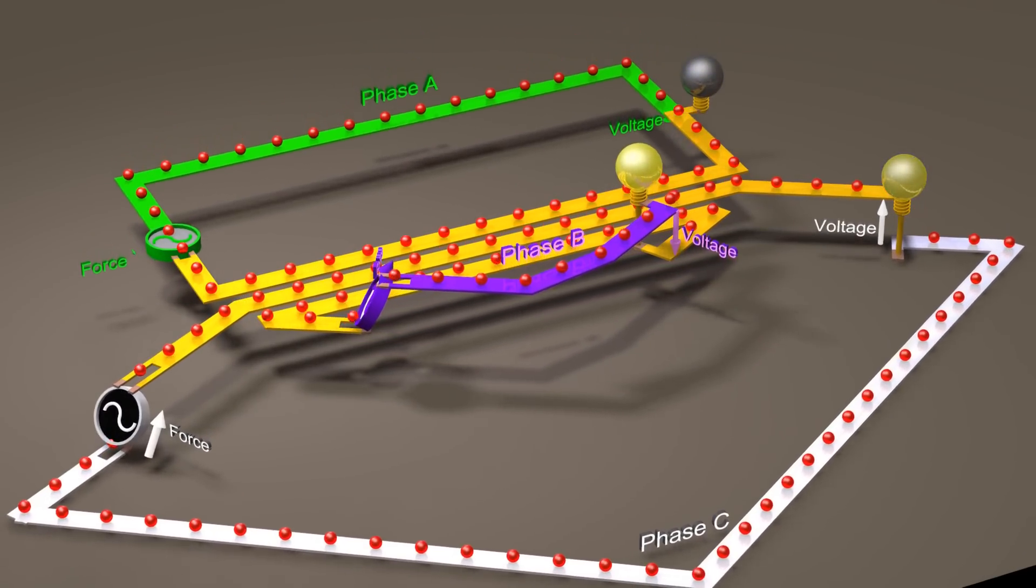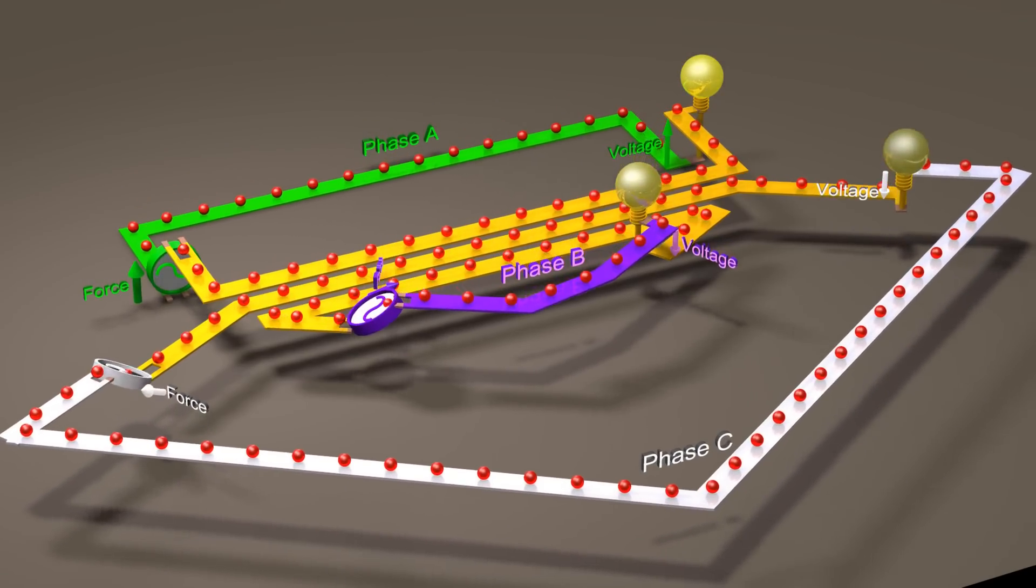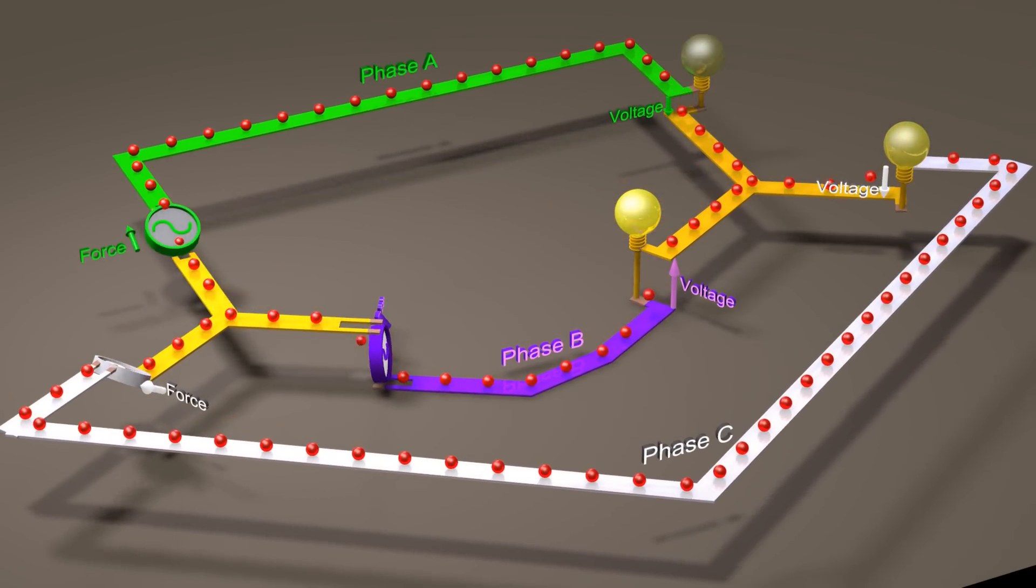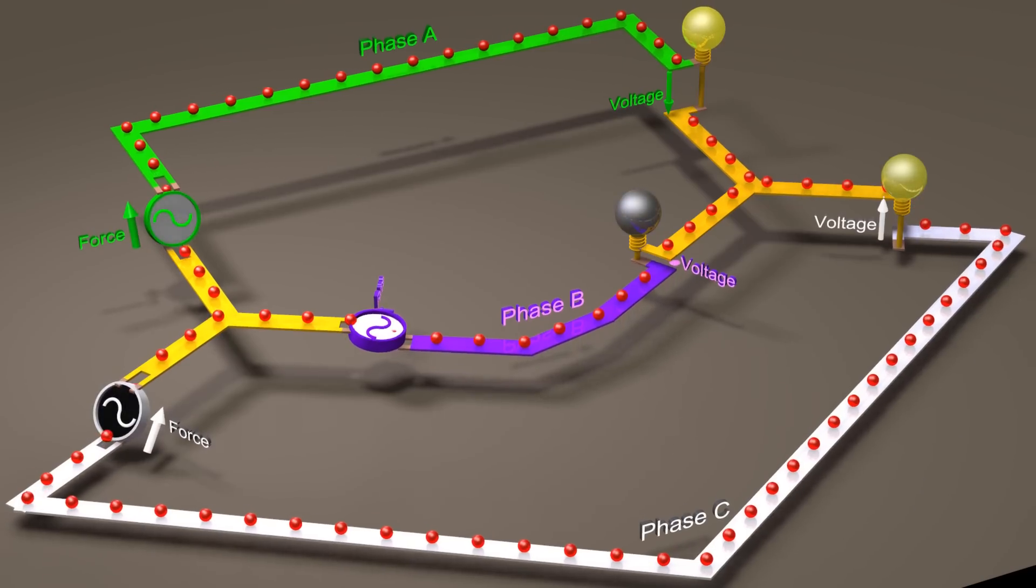Since the sum of the three currents is always zero, we can remove the wires in the middle, and this will have no effect. This allows us to deliver electric power using fewer wires.